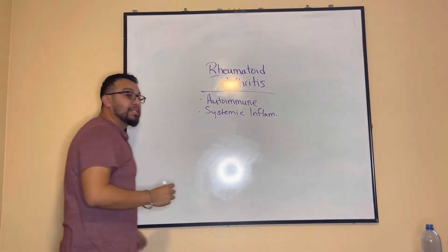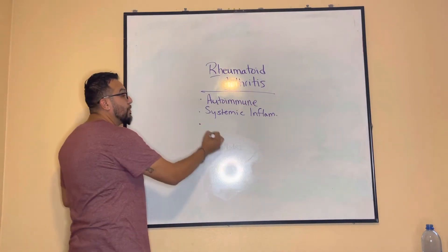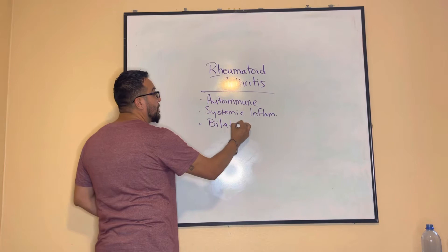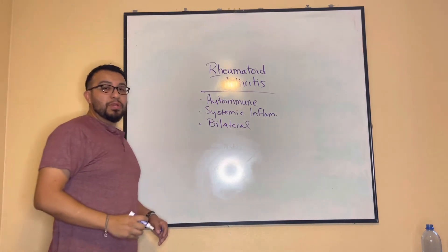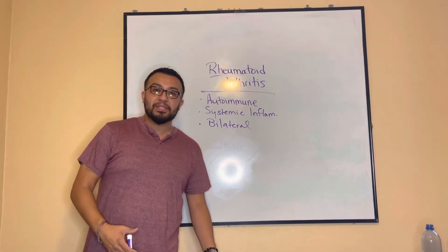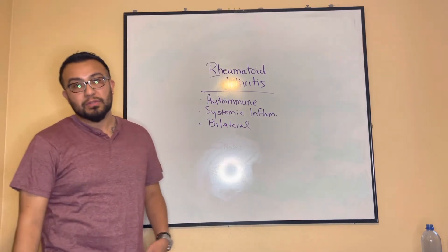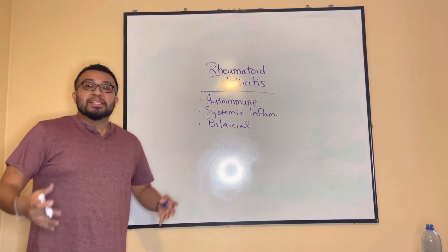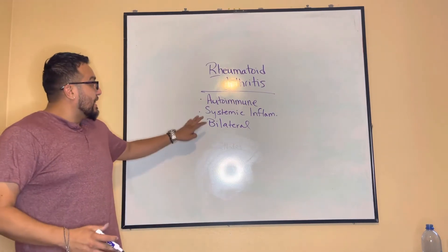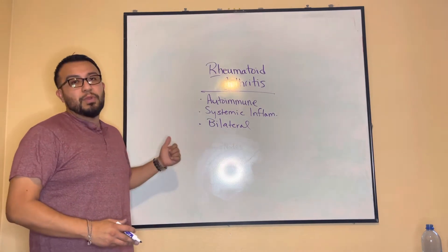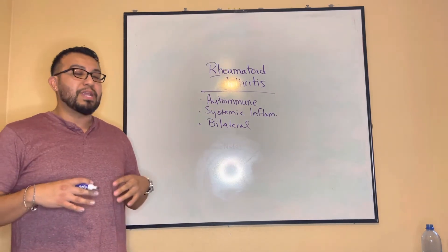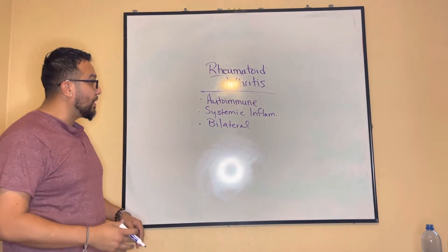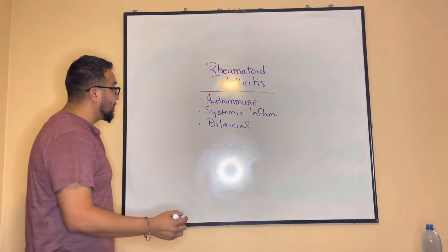RA is a systemic inflammatory condition that will typically cause bilateral damage to the joints. So if your left knee is affected, your right knee is also liable to be affected — same with your elbows and other joints. Both osteoarthritis and rheumatoid arthritis normally affect your diarthritic joints — your freely movable joints — because those are the ones most commonly affected.